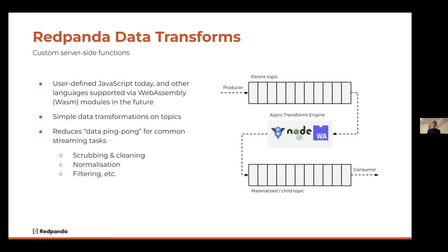With data transforms, being able to run JavaScript and WebAssembly modules within the platform itself allows you to perform things like data validation, data normalization, filtering, and routing within the platform itself — without the data having to ever leave the platform.